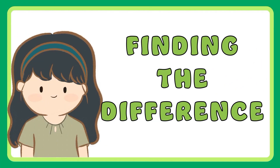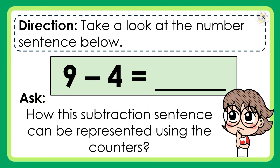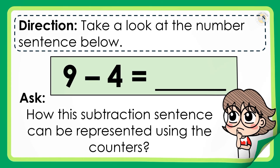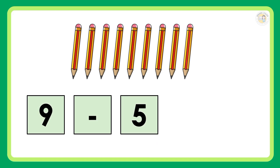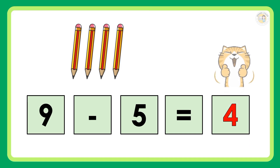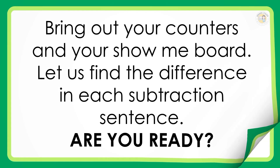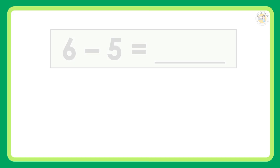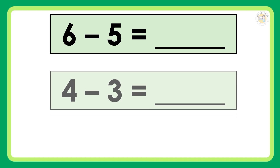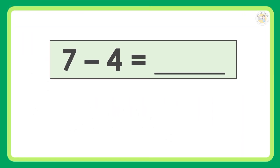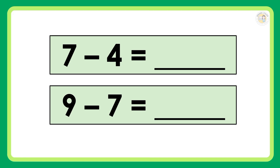Finding the difference. Direction: Take a look at the number sentence below — 9 minus 4 is equal to blank. How can the subtraction sentence be represented using counters? 9 minus 5 is equal to 4. Bring out your counters and your show-me board. Let us find the difference in each subtraction sentence. Are you ready? 6 minus 5 is equal to blank. 4 minus 3 is equal to blank. 5 minus 2 is equal to blank. 7 minus 4 is equal to blank. 9 minus 7 is equal to blank.